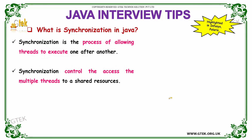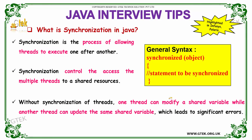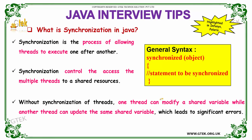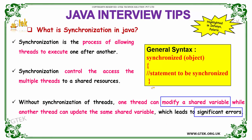What is synchronization in Java? Synchronization is the process of allowing threads to execute one after another. It controls access of multiple threads to a shared resource. Without synchronization, one thread can modify a shared variable while another thread is also modifying the same variable, which leads to significant errors. These patterns of questions are highlighted in interviews of Infosys and Polaris.